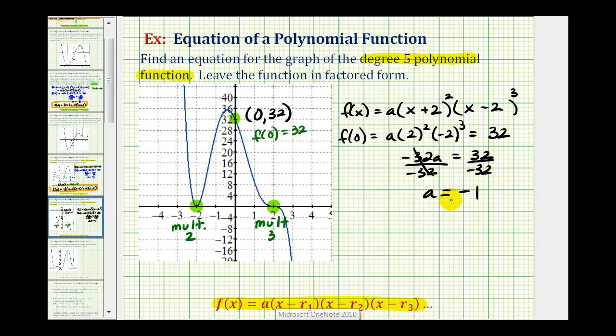And this is all we need to write the function in factored form. We'll substitute negative one for a in this form here. So we'll have f of x equals negative one or just negative. And then the quantity x plus two squared times the quantity x minus two to the third.